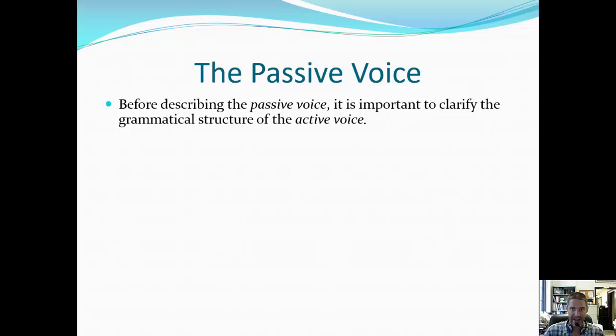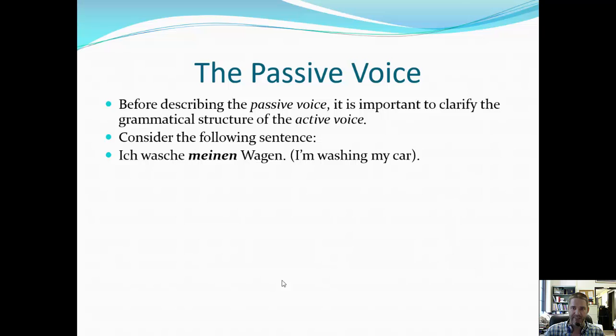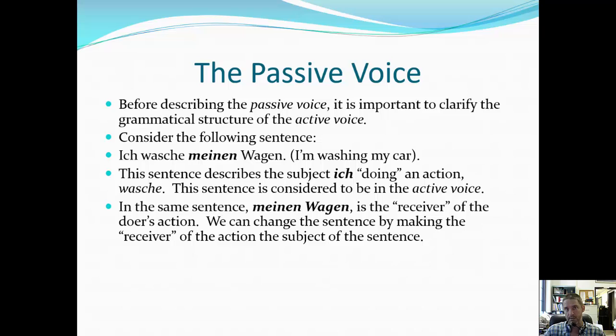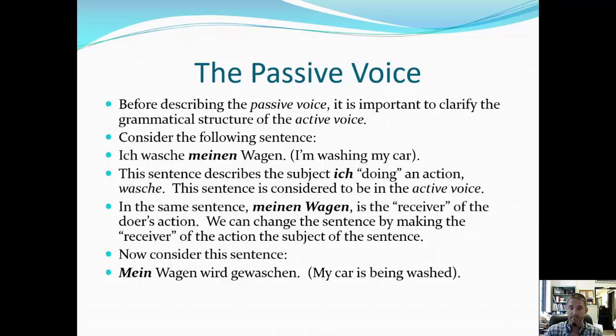Before we get to that, let's look at our active voice — the opposite of passive voice. For instance, 'ich wasche meinen Wagen.' We have 'ich' as the subject and 'meinen Wagen' as the direct object in the accusative case. 'Ich' is nominative, 'meinen Wagen' is accusative. The subject 'ich' is the one doing the action, whereas 'meinen Wagen,' the direct object, is the recipient — the receiver of the doer's action.